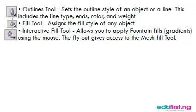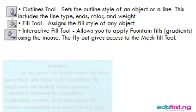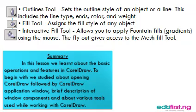The Outline tool sets the outline style of the object — dotted lines or straight lines, and also the thickness of the lines. The Fill tool is basically to assign the fill style of an object, that is, the colors. The Interactive Fill tool is similar to the Fill tool, but it gives access to a fly-out with more fill options. With the regular Fill tool you click to fill the object, but with the Interactive Fill tool you use the mouse to apply the fill.